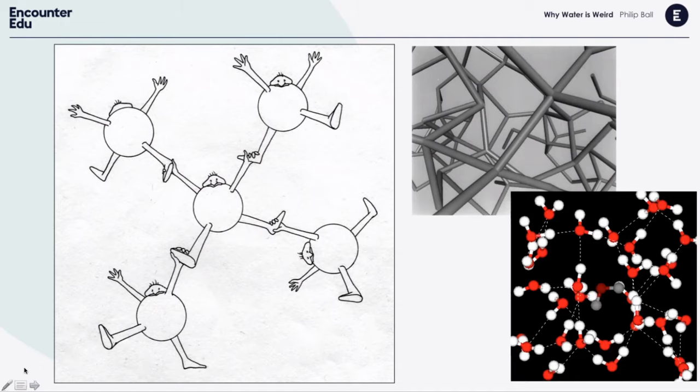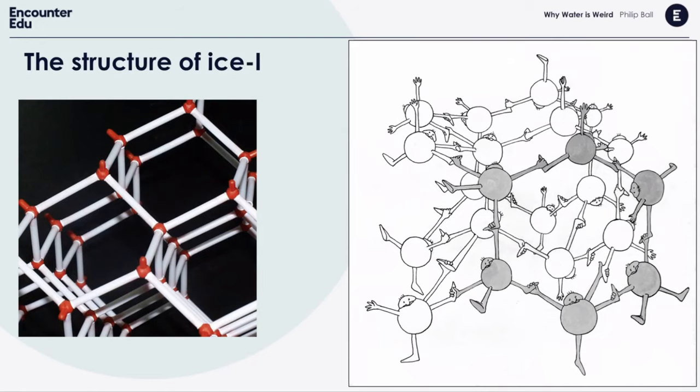The key to water's oddness lies in this delicate balance between the dense packing of molecules that normally happens in liquids and the slightly open network that hydrogen bonds form. In ice, that open network is rigidly imposed — molecules are frozen in place forming a very orderly arrangement, essentially into hexagons. You can see all the empty space in the middle of these rings. That's why ice has a relatively low density compared to water. When ice melts, some molecules can drift a little closer, so the liquid gets a little denser — that's why ice is less dense than water.